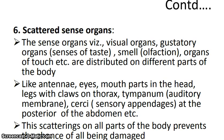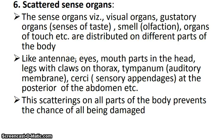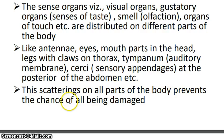Insects have scattered sensory organs distributed on different parts of the body: visual organs, gustatory organs for taste, olfactory organs for smell, and organs of touch. Antennae act in sensory detection; eyes are sensory in nature; mouthparts assist in taste detection; legs have claws on the thorax; tympanum on the legs detects vibrations; and cerci — sensory appendages on the last abdominal segment — also serve sensory functions. This scattering reduces the chance of all sensory organs being damaged.